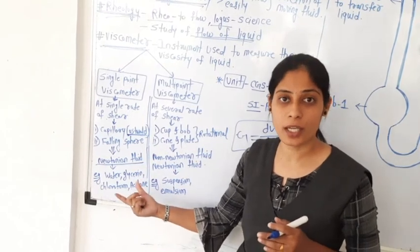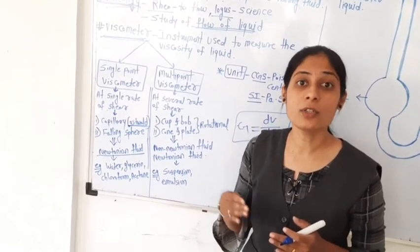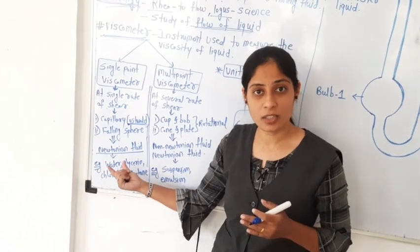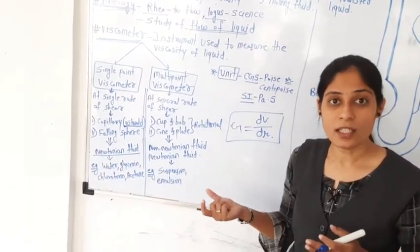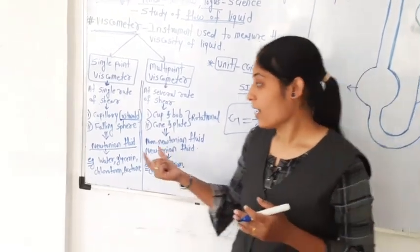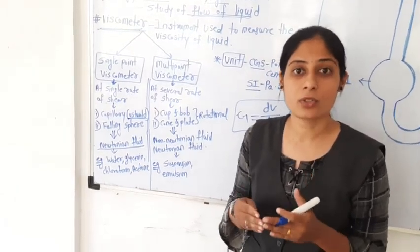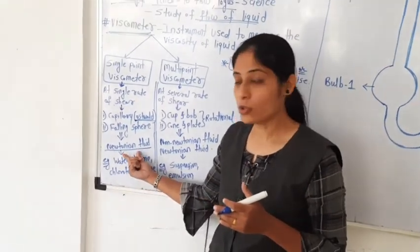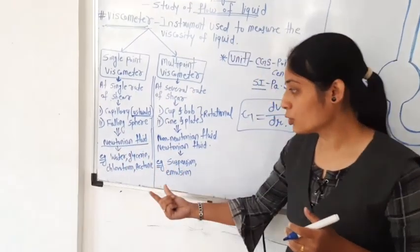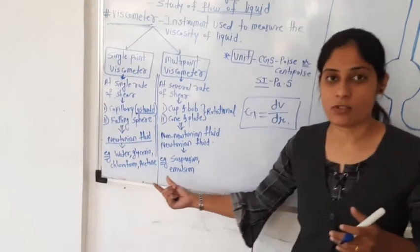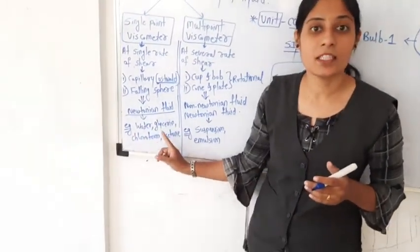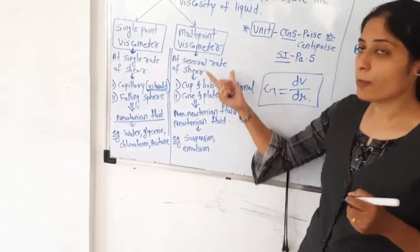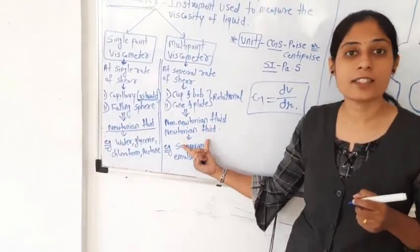Now, what is a Newtonian fluid? A Newtonian fluid obeys Newton's laws of equations. A Newtonian fluid does not change its viscosity with rate of flow. Examples of Newtonian fluids are water, glycerin, chloroform, and acetone. These are all less viscous liquid samples, and they can be used in the single point viscometer.